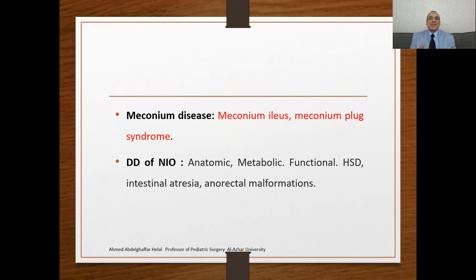We may have gut lumen obstructed due to certain pathology like atresia, volvulus, ischemia, anorectal malformation, or Hirschsprung disease. On the other hand, we may have the gut obstructed from the meconium itself — what is called meconium disease, or deceased meconium. In such cases, the pathology is in the meconium itself and the gut lumen is open. There are no functional abnormalities, no mechanical intestinal obstructions; however, the cause is related to the meconium itself.